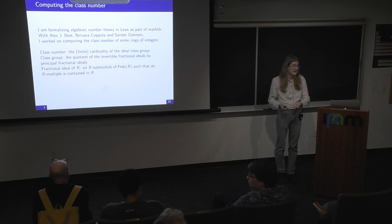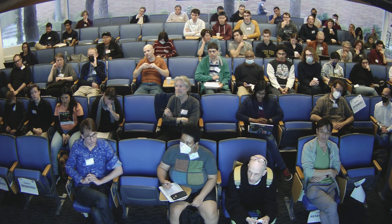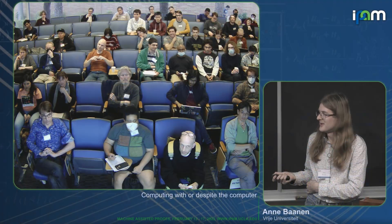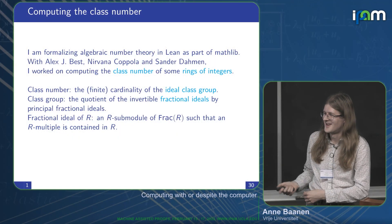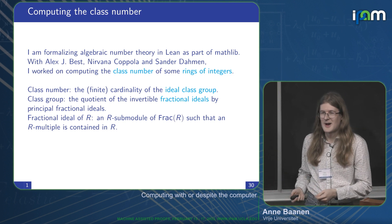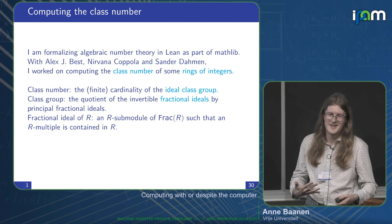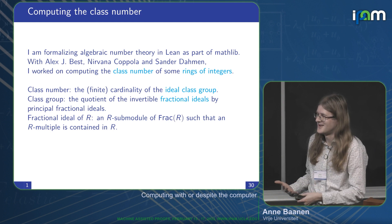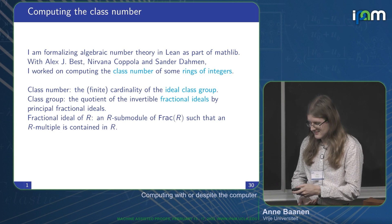So a submodule always goes into R, but here specifically there is some number such that if we multiply everything in the submodule we go into R — it's like an ideal divided by some element. In this definition we want this multiple to be non-zero, but zero is a fractional ideal. This is why I'm careful to say invertible fractional ideals — in the ring of integers we have the zero ideal which is not invertible. By principal fractional ideals I just mean generated by one element.